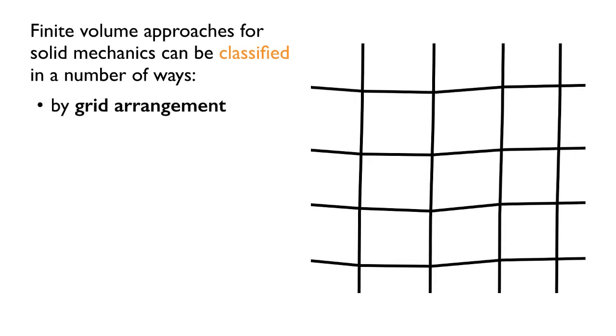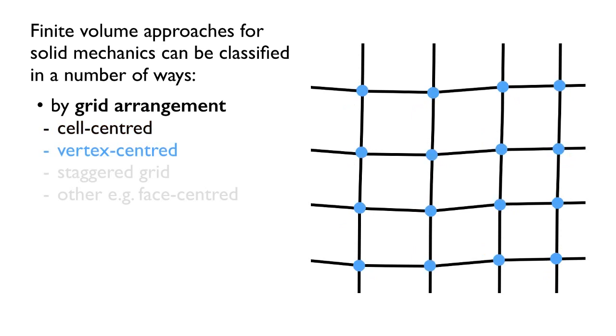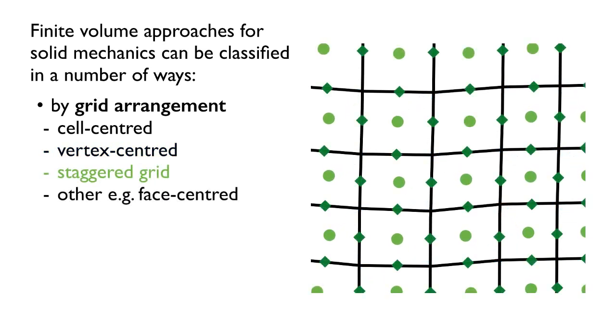When it comes to classifying these different methods, finite volume methods for solid mechanics could be classified in a number of different ways. One could be by grid arrangement. For example, in OpenFOAM, we're familiar with the cell-centered form of the finite volume method. However, people have also used vertex-centered approaches for finite volume solid mechanics. Initially, people also used staggered grids, and there have been other methods as well proposed, such as face-centered approaches.